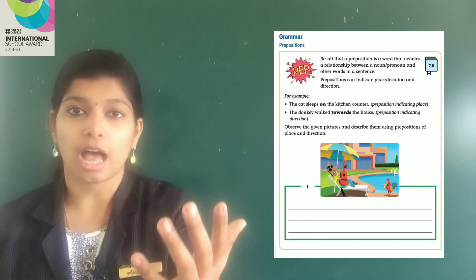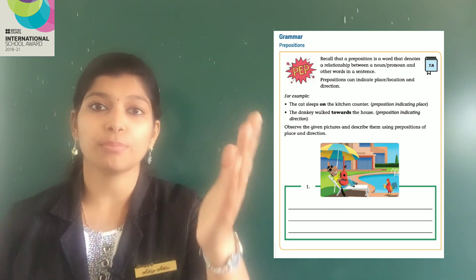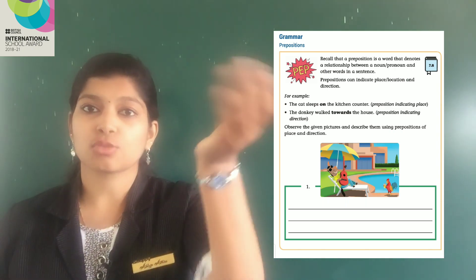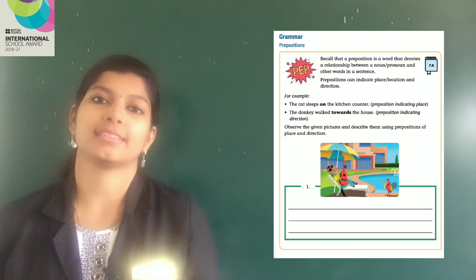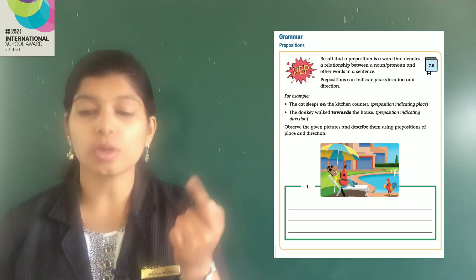Whenever you are going out, you have to go in a direction. In order to come to school, if you have reached near the school gate, to get inside, you have to move towards the school. Right? In the same way, the donkey walked towards the house.